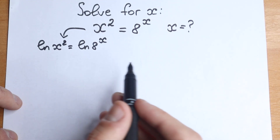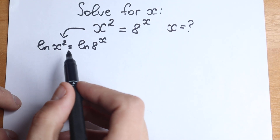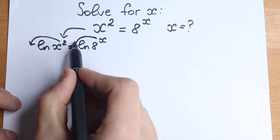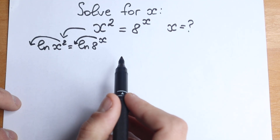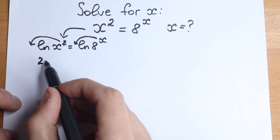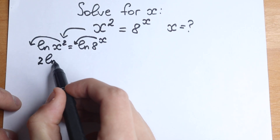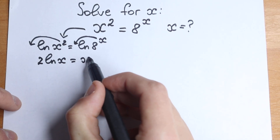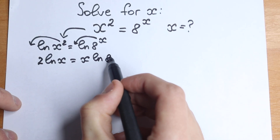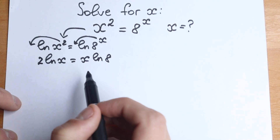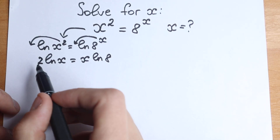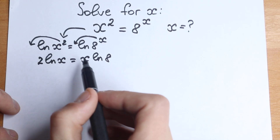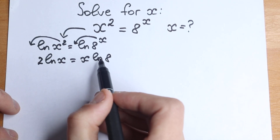Right now we need to know a really important property. The exponents jump in front: we have 2 times natural log x equal to x times natural log 8. If we look closely, natural log 8 is a constant, and x is the variable we need to find.